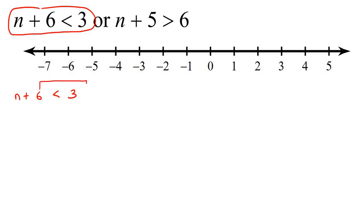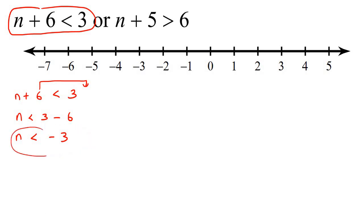We'll take the six over to the other side, where it will become a negative, and then you would just solve — and so there we have it. Now, from the previous lesson, you've got to remember how this all works. If you want to describe this, you would say that N — now look at the sign. Remember, that is the lion's mouth. And if you look at the lion's mouth, it's eating — it's going to try to eat the minus three. So that means minus three is big, because the lion always tries to eat the bigger of them. So N is the smaller one. We'll say N is smaller than minus three.